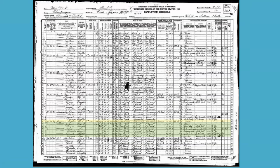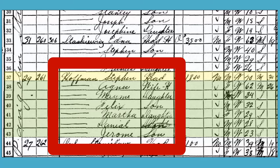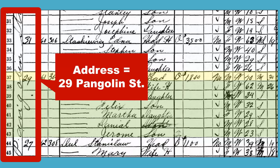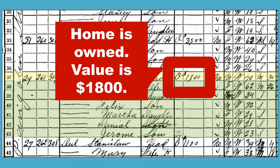Censuses from 1850 forward include excellent information about families. Everyone living in a household is named, and for 1930, the relationship to the head of the household is stated. Here we have Stephen Hoffman and his wife Agnes, and children Mamie, Felix, Martha, Daniel, and Jerome. The family lived at 29 Pangolin Street. They own the house they're living in, which had a value of $1,800. Their gender, race, and ages are recorded. This column lists the age at Agnes and Stephen's first marriage — Stephen was married at 34 and Agnes at 26.